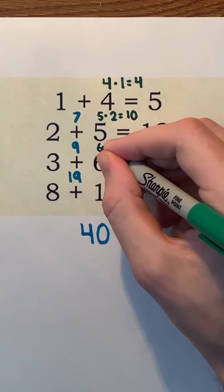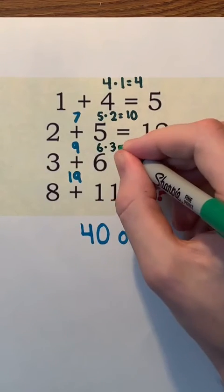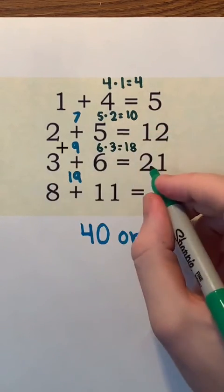In the third equation, we have 6 times 3 which is 18. Then, 18 plus 3 is 21.